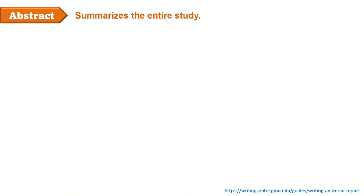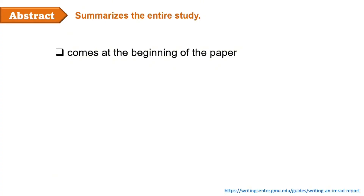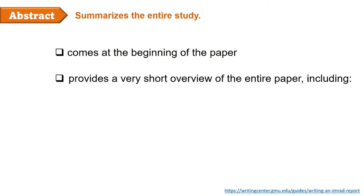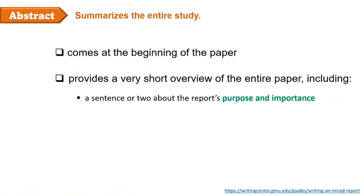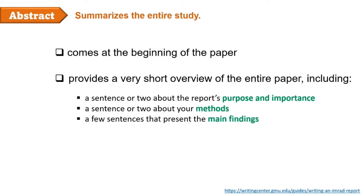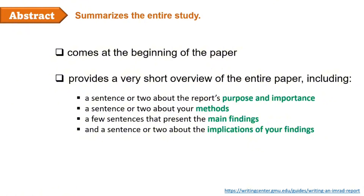Next is the abstract. It summarizes the entire study. The abstract comes at the beginning of the paper, but you should write it after you have drafted the full report. The abstract provides a very short overview of the entire paper, including: a sentence or two about the report's purpose and importance, a sentence or two about your methods, a few sentences that present the main findings, and a sentence or two about the implications of your findings.